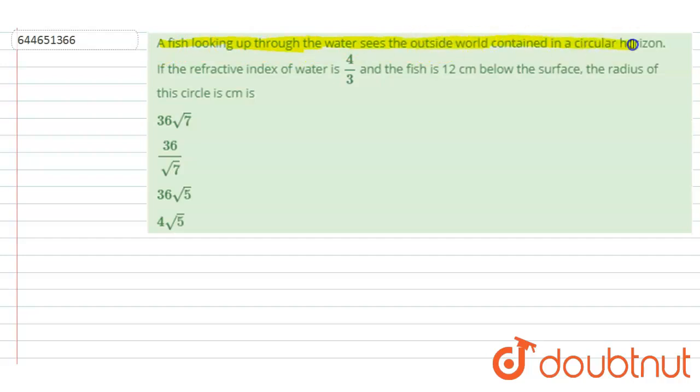If the refractive index of the water is 4 by 3 and the fish is 12 centimeter below the surface, then the radius of this circle in centimeter.